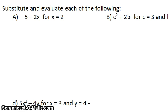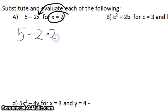So let's take a look at letter A. 5 minus 2x, for x equals 2. So that means I'm going to take x equals 2 and I'm going to put 2 in the place of x in my expression. So instead of writing 5 minus 2 times x, I'm going to write times 2. And you may be wondering how I knew to put the multiplication sign right there. Well, that's because when you have a number and a variable like this, there is a multiplication sign implied right there. It's just not shown.